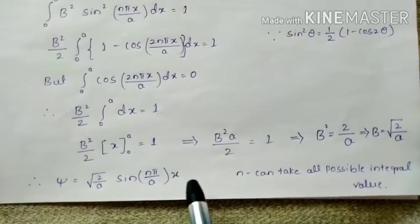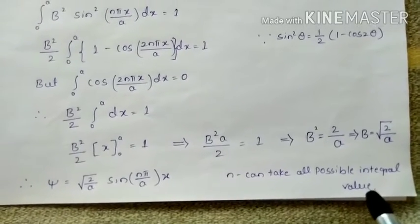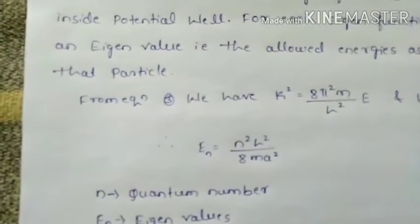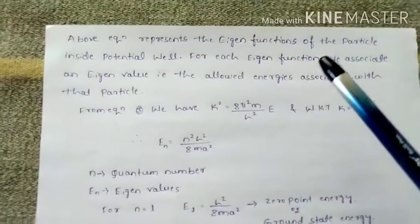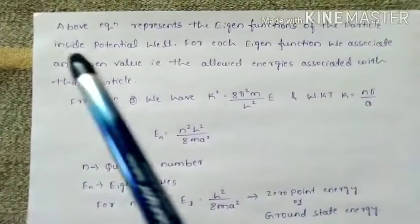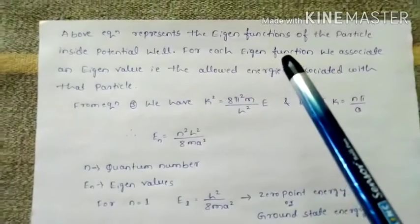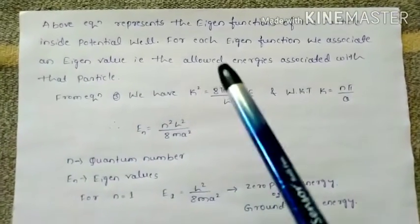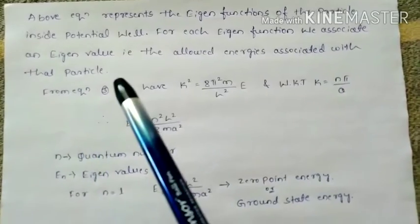Substituting this B value into the wave function equation, we get psi equals √(2/A) sin(nπX/A). This is the normalized wave function, where n can take all possible integral values. These are the eigenfunctions of the particle inside the potential well, and for each eigenfunction we associate an allowed energy eigenvalue.